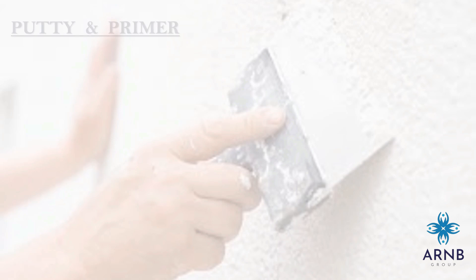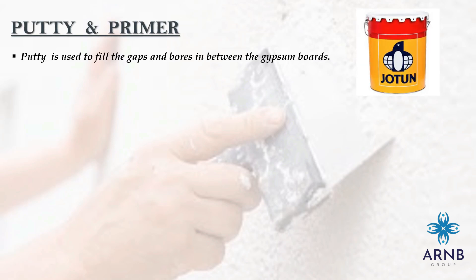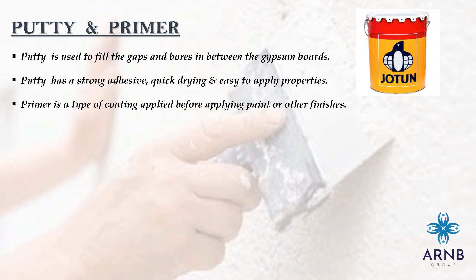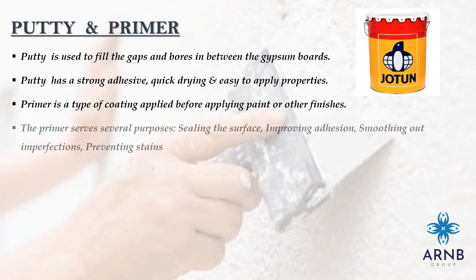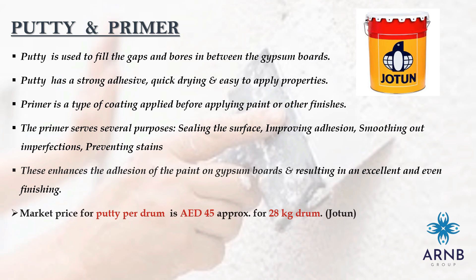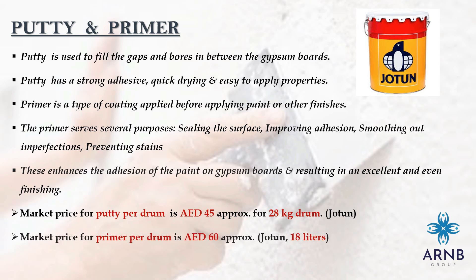The next and last stage of drywall partition is final finishing. Putty is used to fill the gaps between gypsum boards, and has strong adhesive, quick-drying, and easy-to-apply properties. Primer is a coating applied before paint or other finishes, serving to seal the surface, improve adhesion, smooth out imperfections, and prevent stains. Putty and primer enhance paint adhesion on gypsum boards, resulting in an excellent and even finish. Market price for putty per 28 kg drum is around 45 AED, and for primer per 18-litre drum is around 60 AED.